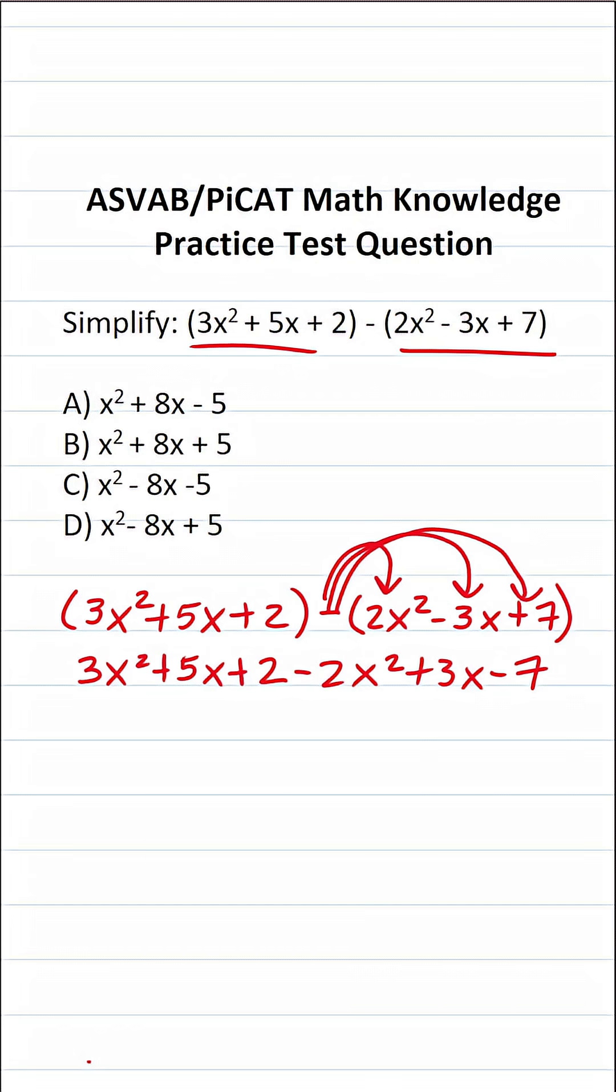So by distributing that negative sign I created one big polynomial, and now my only task is to go through each of these terms and combine my like terms.